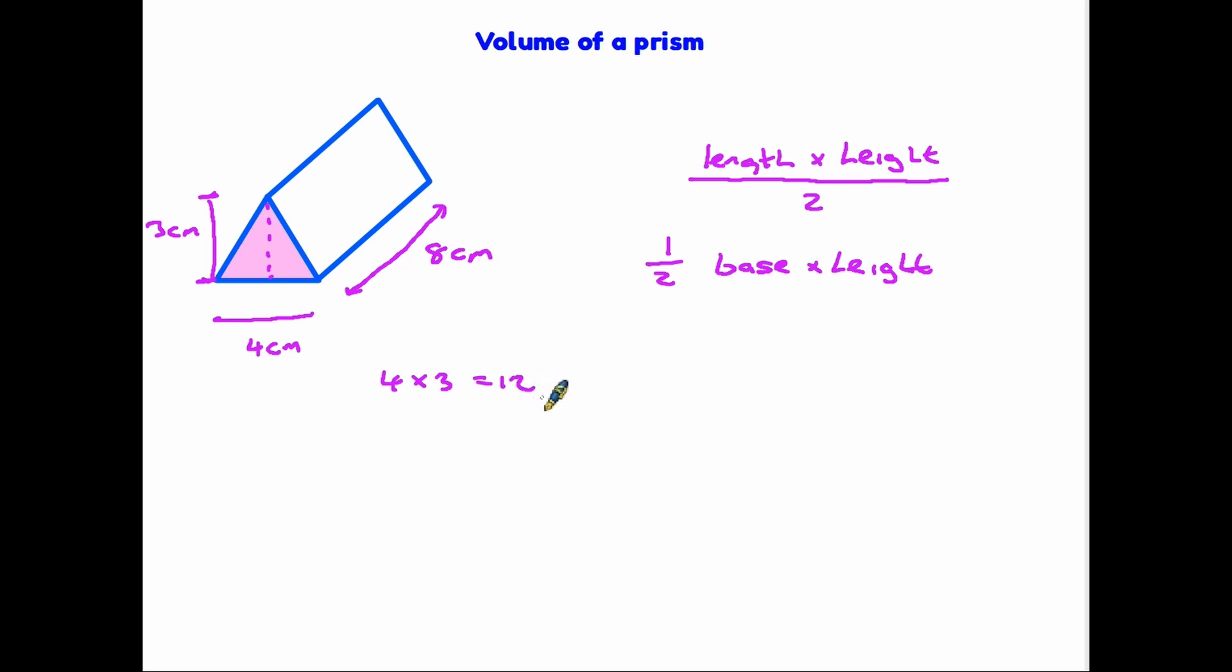It is 4 times 3 - 4 times 3 is 12. We then divide that by 2, therefore we get 6. So 6 centimeters squared is the area of the triangle at the front. We then follow our rule as we did with the previous two examples - we take that area and multiply by the length of the prism. 6 times 8 is 48 centimeters cubed.